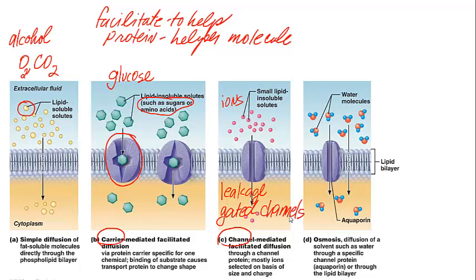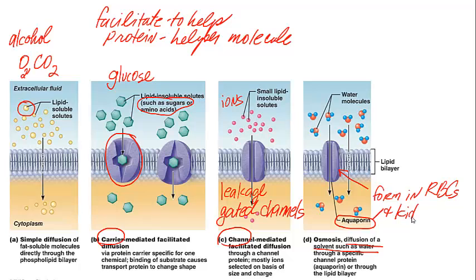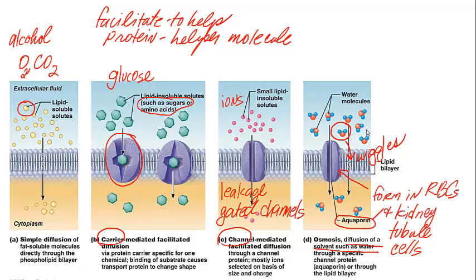The last type of passive movement is osmosis — the diffusion of water — which is very important in the body. There is a specific protein called an aquaporin, and these aquaporins actually form in the membranes of red blood cells as well as kidney tubule cells. Another mechanism water uses to get through membranes is that the water molecule actually just wiggles its way through the membrane, so water can enter without the use of aquaporins.